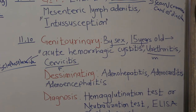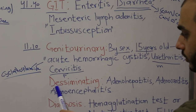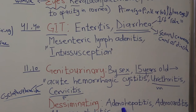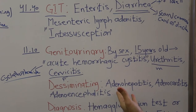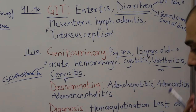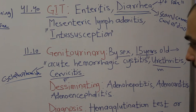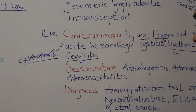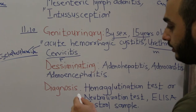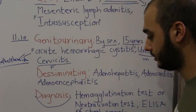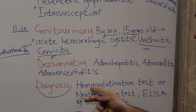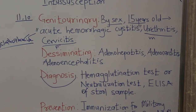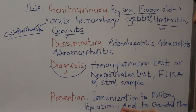In immunocompromised patients, adenovirus can cause disseminated infection, including adeno-hepatitis, adeno-carditis, and adeno-encephalitis.